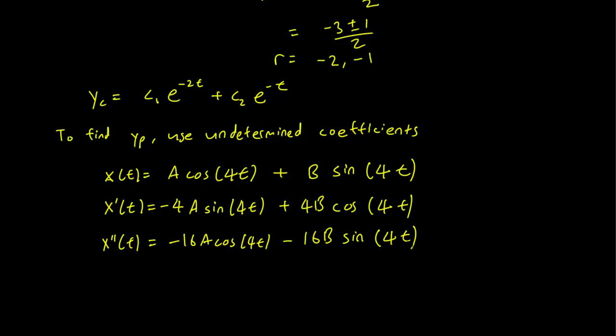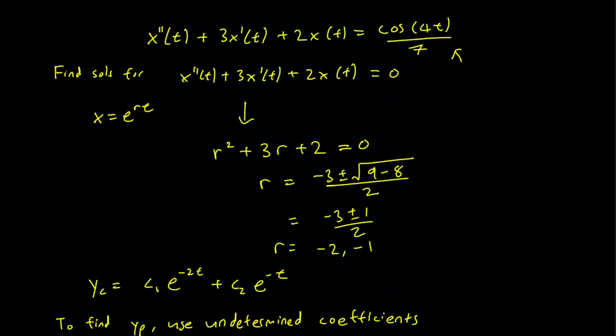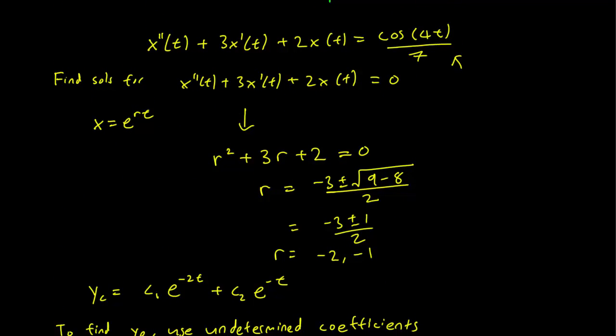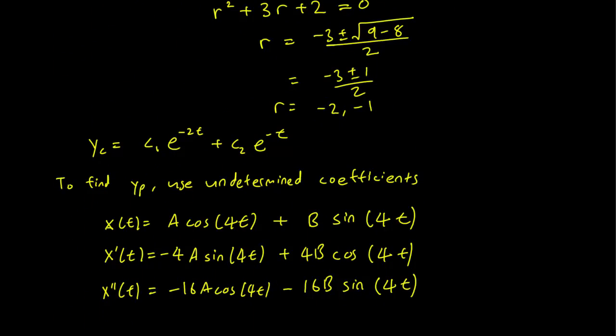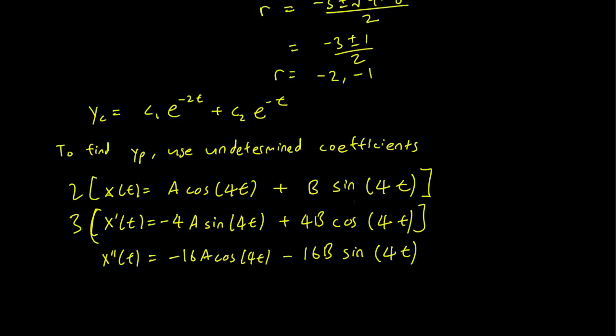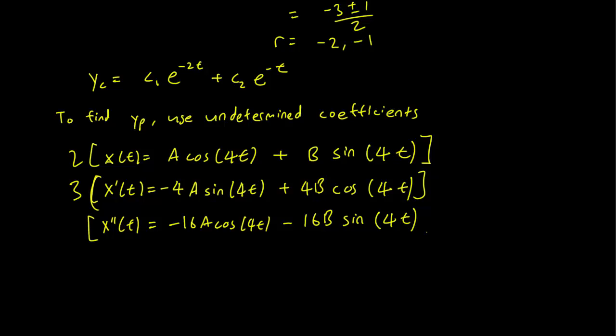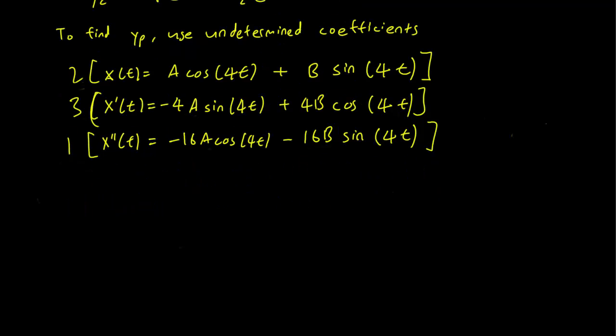Alright, and our equation is x'' + 3x' + 2x. So we have x'' + 3x' + 2x. And all this equals (1/7)*cos(4t).